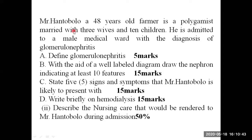Mr. Han Tobolo, a 48-year-old farmer, is a polygamist married with three wives and 10 children. He is admitted to a male medical ward with a diagnosis of glomerulonephritis. Question one asks to define glomerulonephritis. We can define glomerulonephritis as a renal disorder in which there is inflammation of the glomerular capillaries, resulting in impaired renal function, and is characterized by proteinuria, hematuria, and periorbital edema.